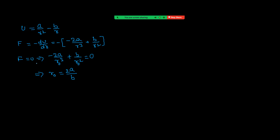Now we have to check whether this position corresponds to stable equilibrium. For stable equilibrium, potential energy should be minimum. That means if I take the second derivative d²u/dr², and substitute this value, if we get a positive result, then potential energy is minimum and it is stable equilibrium. If negative, potential energy is maximum.